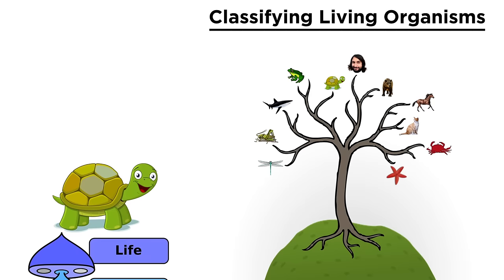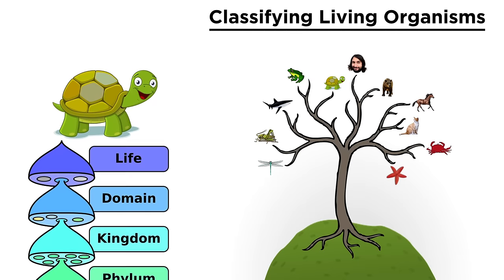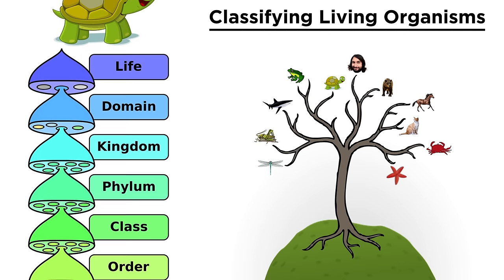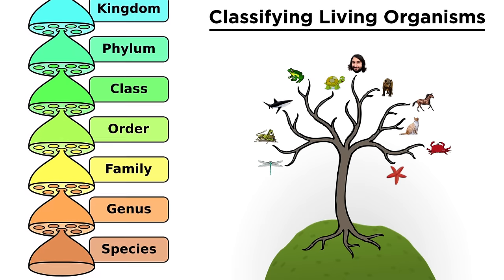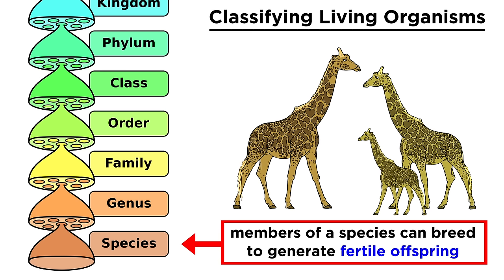We have a way of classifying an organism that tells us exactly how it is related to everything else, how recently or distantly, and every organism belongs to a particular species. These are groups of populations that have sufficiently similar genetic material such that they are capable of breeding to generate viable, fertile offspring. If two organisms can do this, they are of the same species; if not, they aren't.